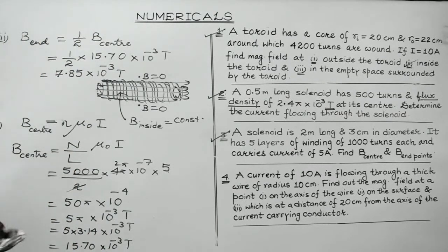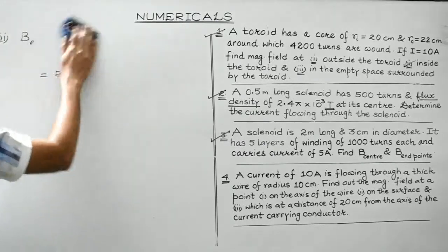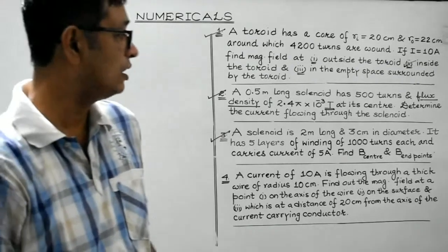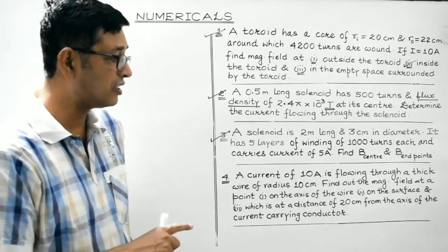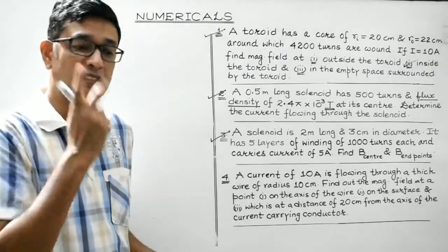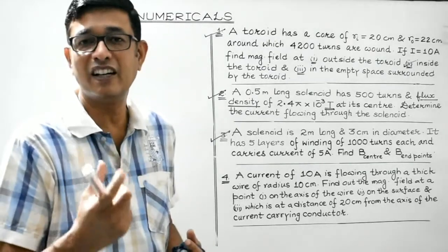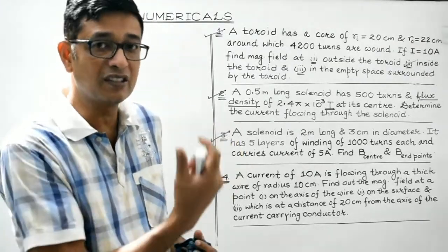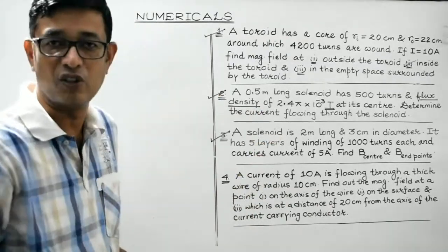Question number four: a current of 10 Ampere is flowing through a thick wire of radius 10 cm. Find the magnetic field at a point on the axis of the wire, on the surface, and at a point 20 cm from the axis. This is the third application of Ampere Circuital Law — we determined the magnetic field at different points due to a thick current-carrying conductor and discussed the graphical variation.